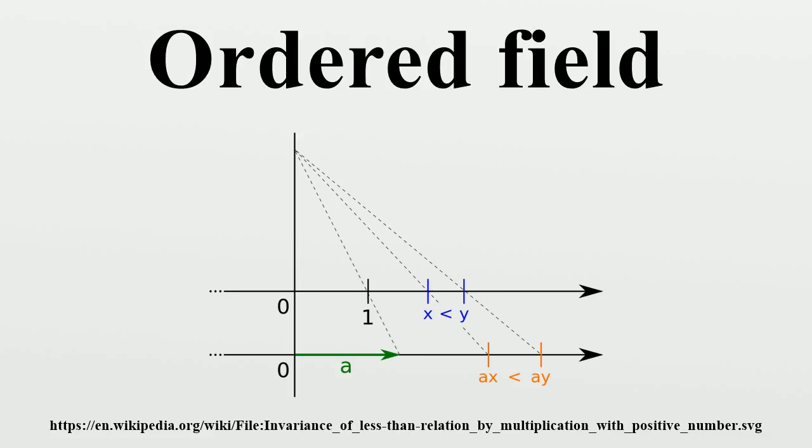One can multiply inequalities with positive elements. If A less than B and 0 less than C, then AC less than BC.